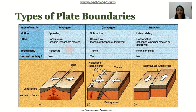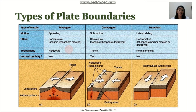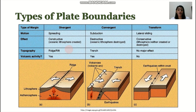Next, we have convergent boundaries, where two plates collide — this is subduction. The effect is destructive, meaning oceanic lithosphere is destroyed. There are three types: oceanic crust to oceanic crust collision, which forms submarine volcanoes and sometimes trenches; oceanic crust to continental crust collision, which forms mountain ranges and sometimes trenches; and continental crust to continental crust collision, which forms different mountain ranges. It can also cause volcanic activity.